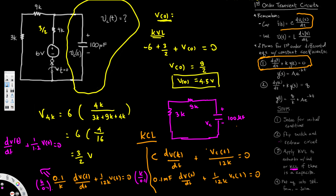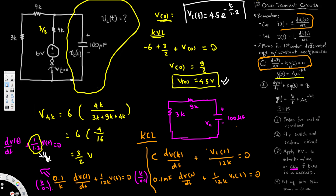The equation matches the standard pattern y(t) = A·e^(−k·t), where k = 1/1.2 and A is the initial condition 4.5. So the final answer is: v_c(t) = 4.5·e^(−t/1.2). I hope this helps — thanks for watching.